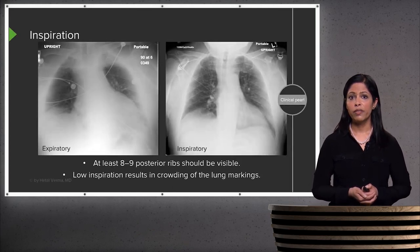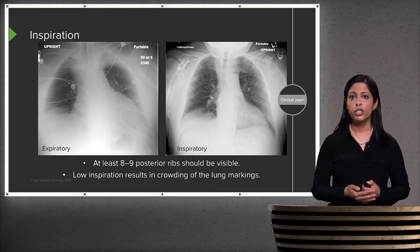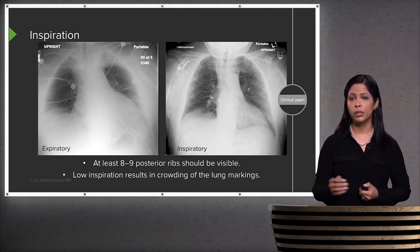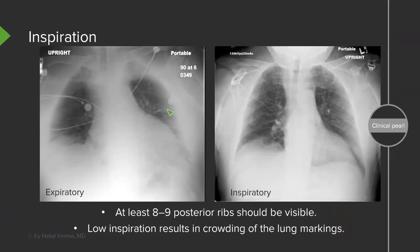This is an example of an expiratory film versus an inspiratory film. When a chest x-ray is obtained, you really want to obtain it in optimum inspiration. That means about eight to nine posterior ribs should be visible. The ribs that are seen best are the posterior ones, and you start from the top and count all the way down to the bottom.